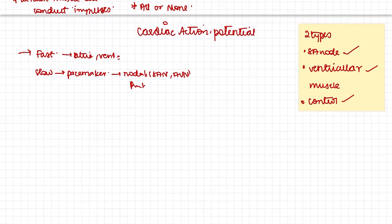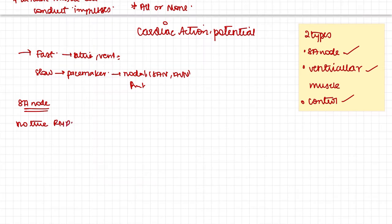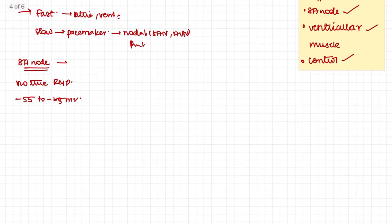We will see the ionic basis of action potential first in the slow type, using the SA node as an example. The heart doesn't stay at rest — for a cell to have a resting membrane potential it must be at rest, but since the heart is always pumping, there is no true resting membrane potential. The least potential level it can reach is minus 55 to minus 65 millivolts. The SA nodal cells are self-excitable because they have inherent leaky channels for sodium and calcium.